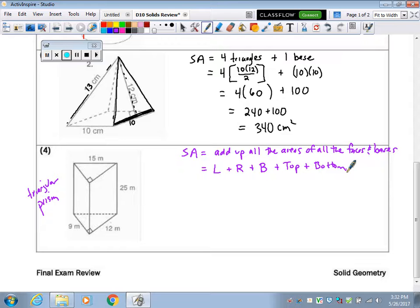So it's helpful on the picture if you label what you know. So this edge right here is 12. This edge is 25. That also makes this edge 25. This back edge is 15. So this back edge is also 15. This edge is a 12. And this edge is a 9.